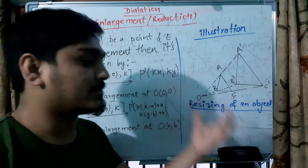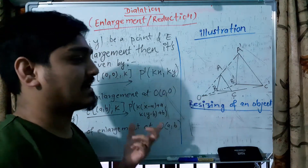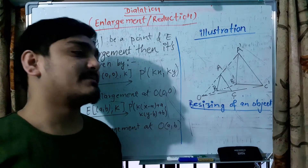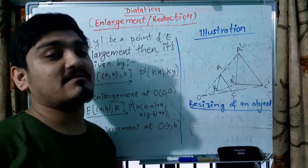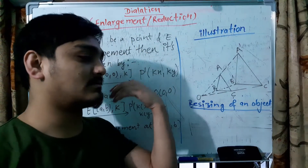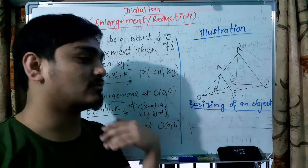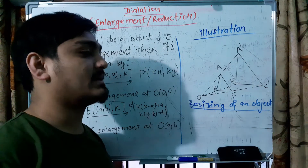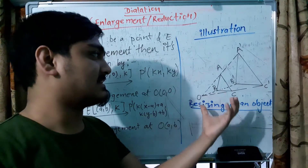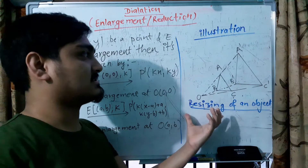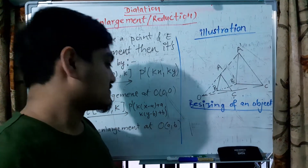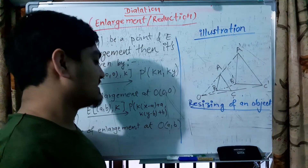Basically in the book we have enlargement. In the scale factor, the enlargement depends on the scale factor, and the positive value gives a good result. Then we can see the result of an enlargement, so that is the formula.